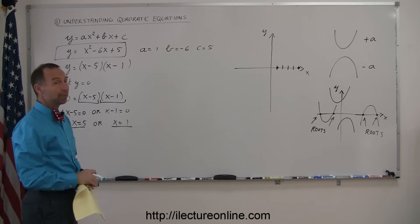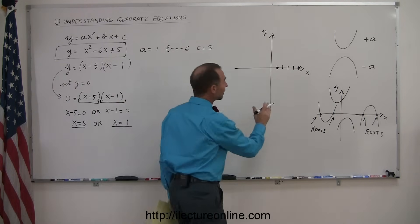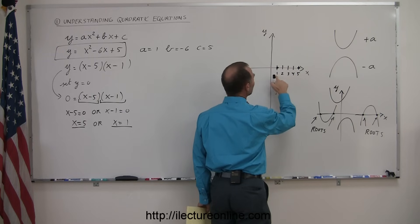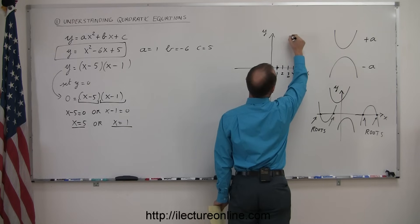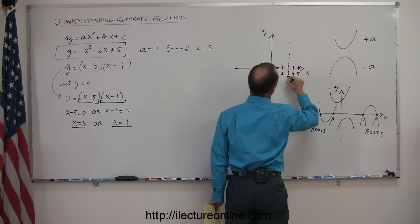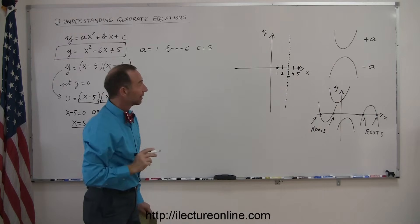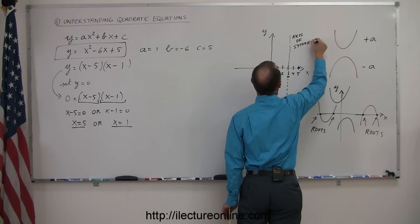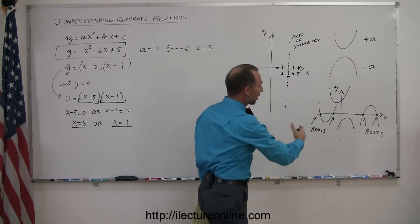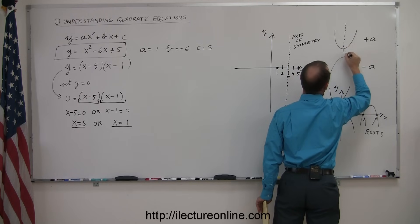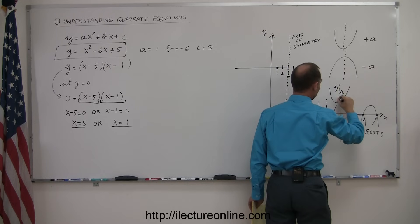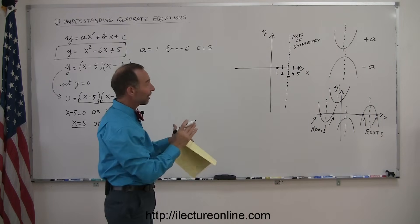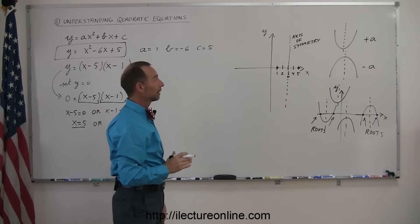Another important thing about a quadratic equation is the axis of symmetry. If I find the midway point between the two roots — between 1 and 5 — that midpoint is 3. Drawing a vertical dashed line through x equals 3 on the x-axis, that is called the axis of symmetry. It divides the parabola into two equal parts.